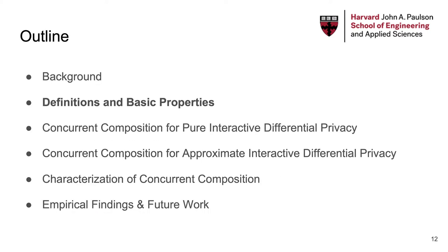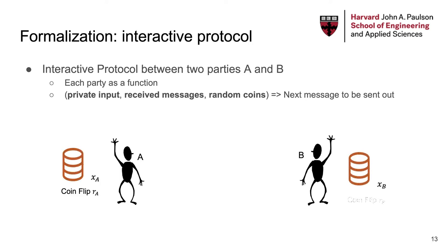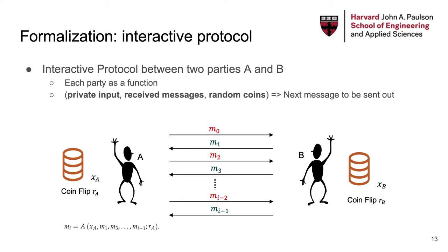Now we talk about some formalization and basic properties of concurrent DP composition. We first formalize the notion of interactive protocol. An interactive protocol is between two parties, A and B. We do this by viewing each party as a potentially randomized function, taking its private input, the party's random coins, and all messages it has received, to the party's next message to be sent out.